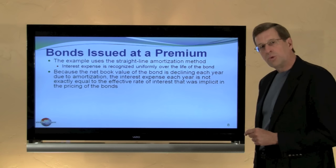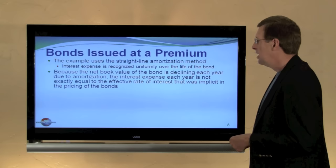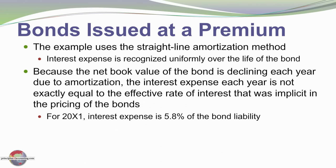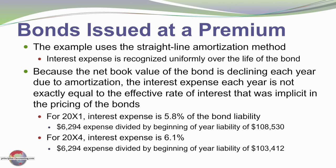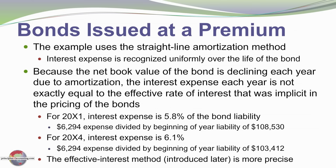In another module covering the effective interest method, we'll see that interest expense is a constant percentage of the changing carrying value of the debt. For example, in 20X1 interest expense was 5.8% of the liability — $6,294 divided by $108,530. By 20X4 interest expense is 6.1% of the debt — $6,294 divided by $103,412. The effective interest method is more precise and required under GAAP where the premium or discount is a material amount.